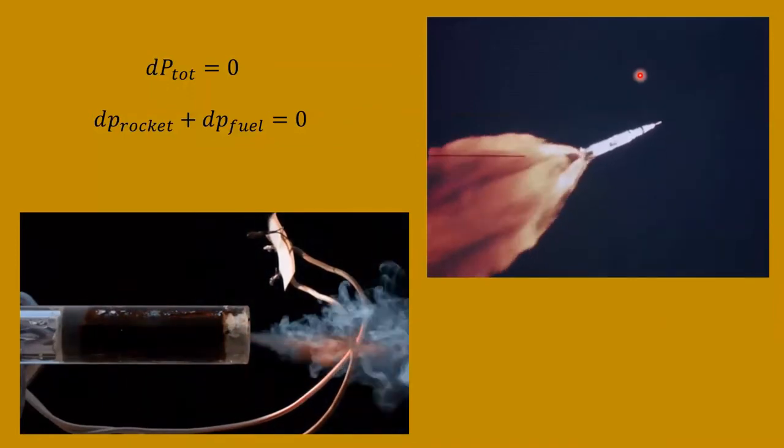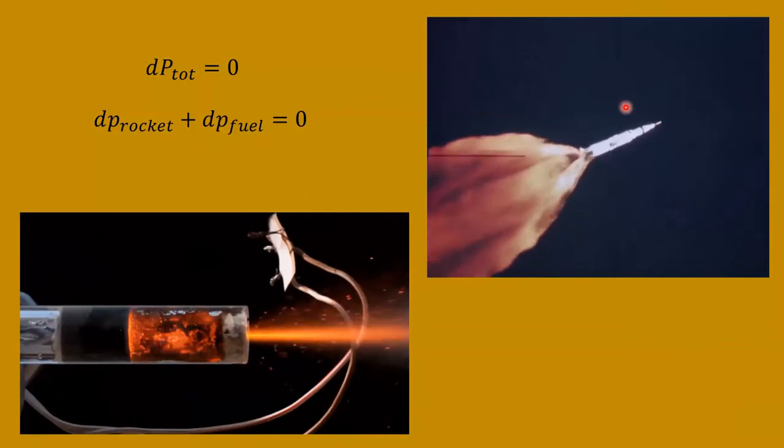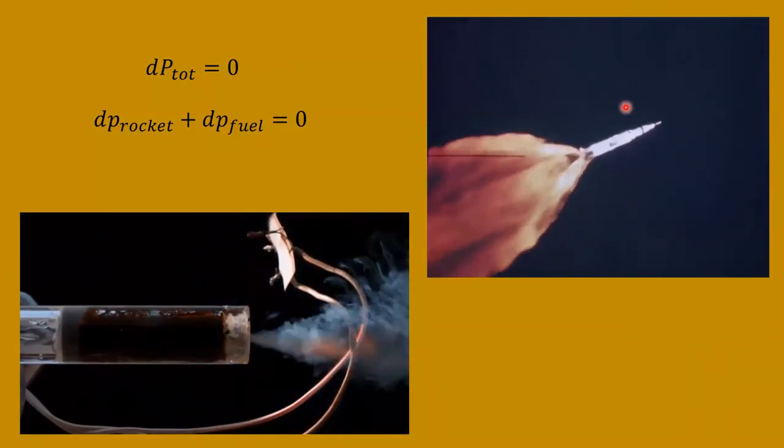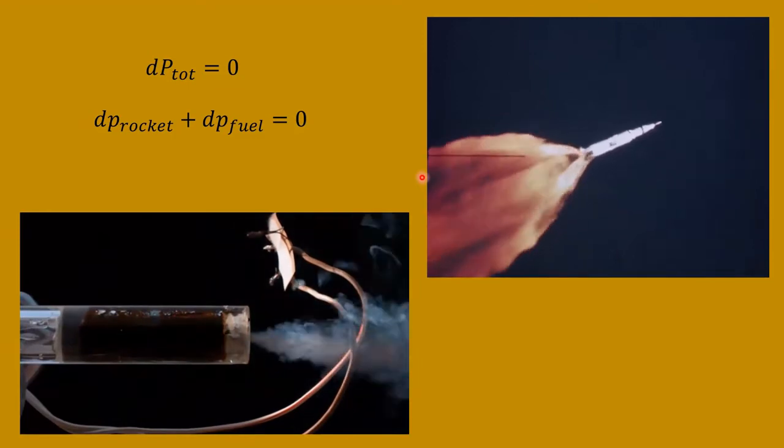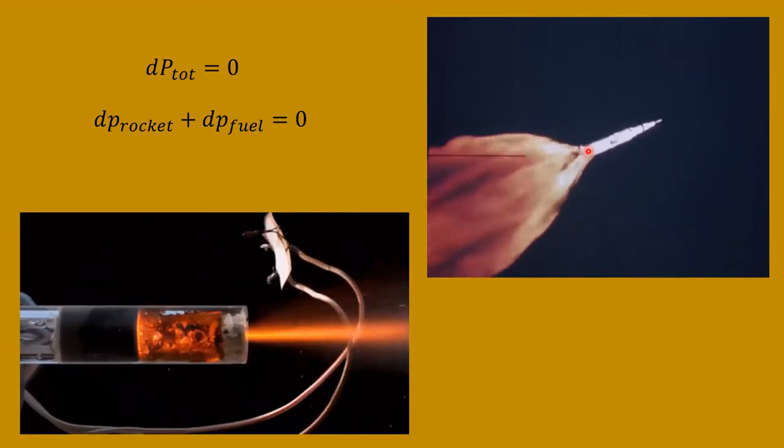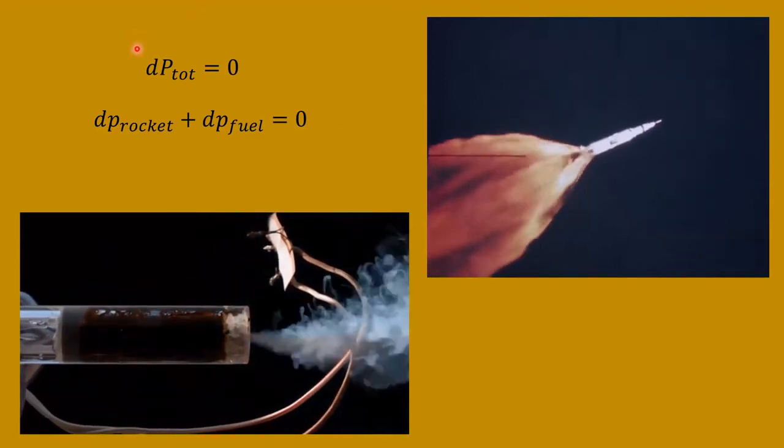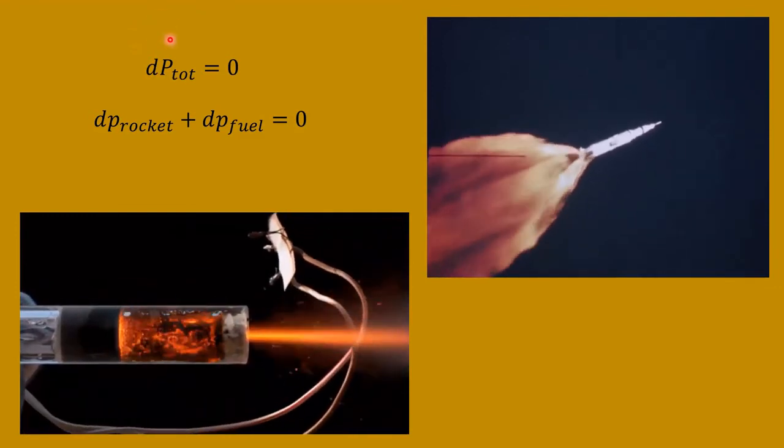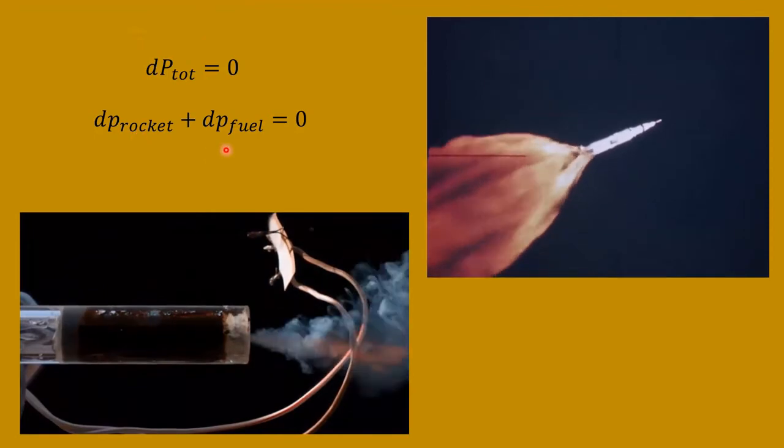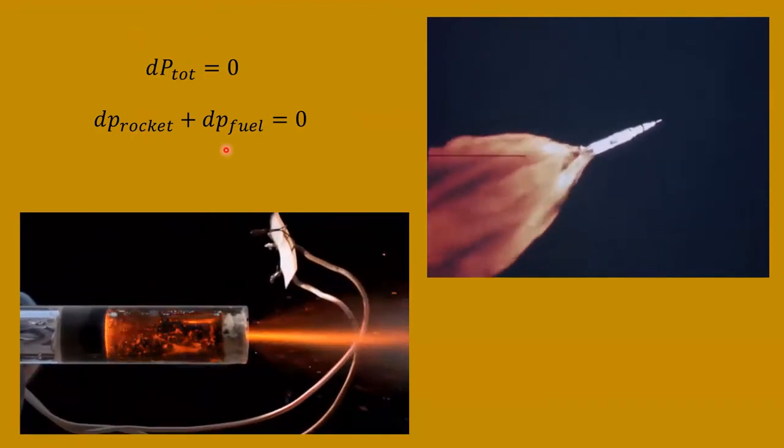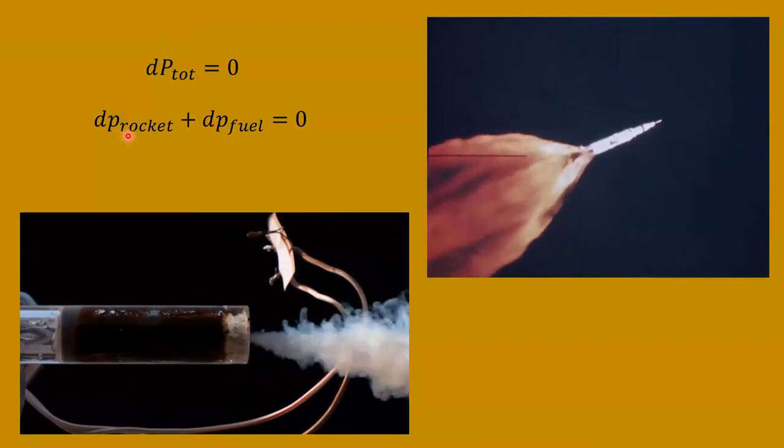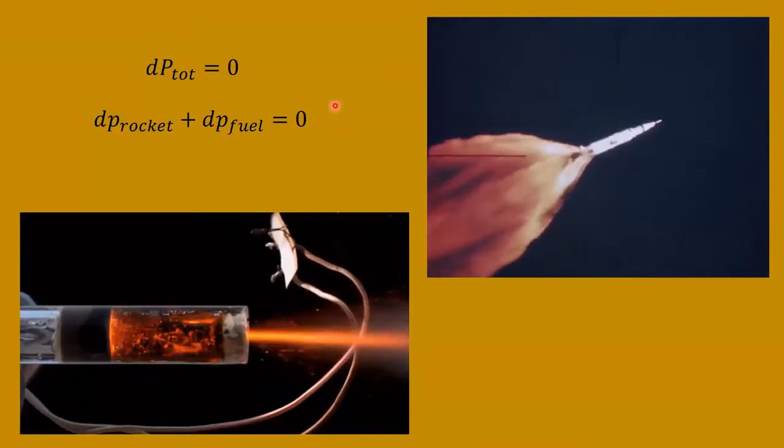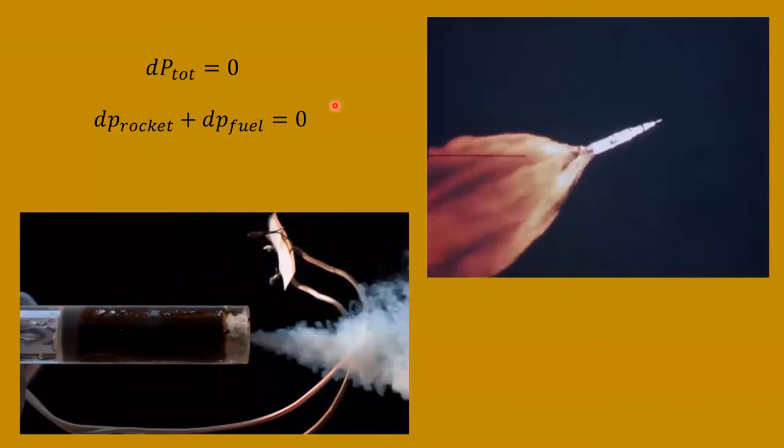And that's the same principle behind how rockets work. Think of the rocket like that guy on the skateboard. And instead of ejecting that athletic ball to the left and giving it momentum, the rocket is ejecting fuel particles. So the fuel particles are endowed with what you might call negative momentum if it's going to the left. And the rocket must acquire an additional positive momentum to balance that out.